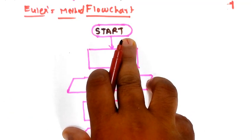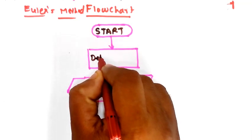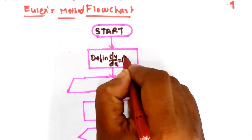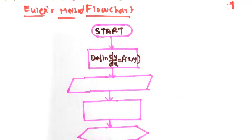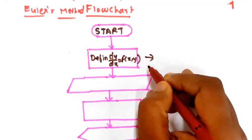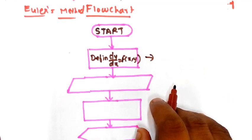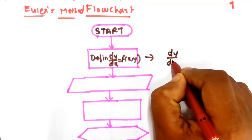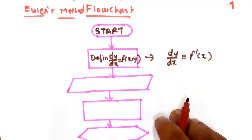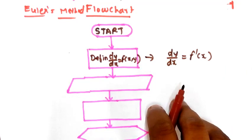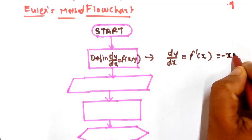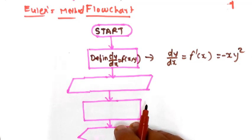Next we have to define the function — dy by dx, which is a function of f(x, y). So define the given function as dy by dx equal to f of x. For example, dy by dx is a function of minus x y squared. This is one of the examples.